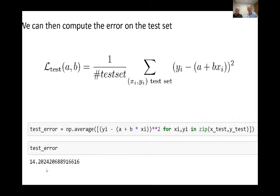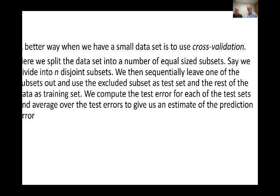We can compute the loss function on the test set and get what we call a test error — averaging over the test points — and here we get a test error of 14.20. That's a measure of how well this model can be used for prediction. There are different ways of estimating how well it will perform on a test set, one of which is cross-validation: you split the data into equal-size subsets, leave one out, fit on the remainder, and see how well it does on the left-out subset.